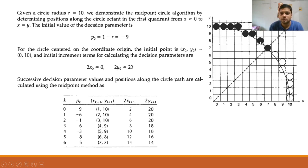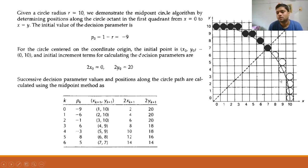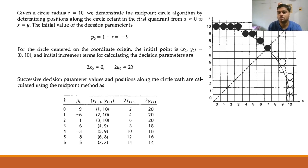Continuing the iterations further, the computed pixel positions are: (1,10), (2,10), (3,10), (4,9), (5,9), (6,8), and finally (7,7). At (7,7) we have x=y, so the loop terminates. These points are then mirrored across the 45-degree octant line and copied into the remaining seven octants.